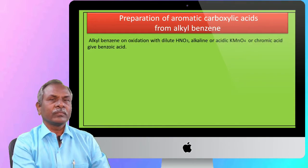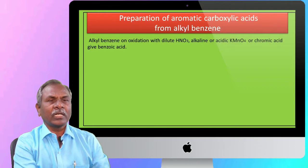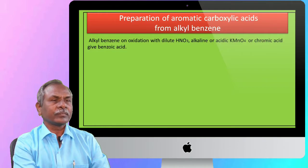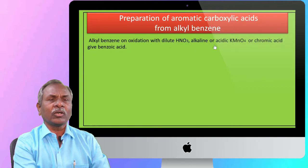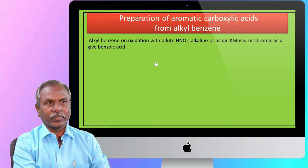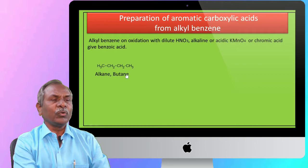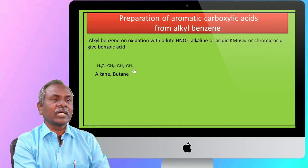On oxidation with dilute nitric acid, alkaline or acidic KMnO4, or chromic acid, alkyl benzene gives benzoic acid. However, when we consider butane, which is a saturated hydrocarbon, on oxidation with potassium permanganate there is no reaction.